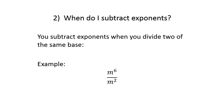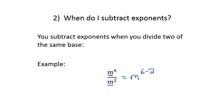Our second rule deals with subtracting exponents. When you divide two of the same base, you subtract the exponents. We have m to the sixth and m squared — it's the same base twice. That means we subtract top minus bottom exponent: m to the six minus two. Six minus two gives us m to the fourth.